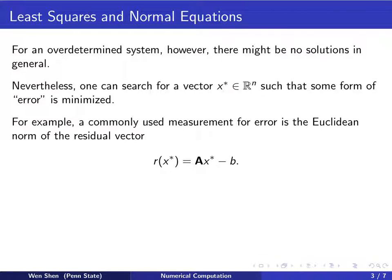We now give an example of a commonly used measurement for the error. Let's consider the Euclidean norm of the residual vector. The residual vector r at x star equals A times x star minus b. This measures how much the equation is not satisfied by x star. Note that if r shall be 0, then x star would be a solution.